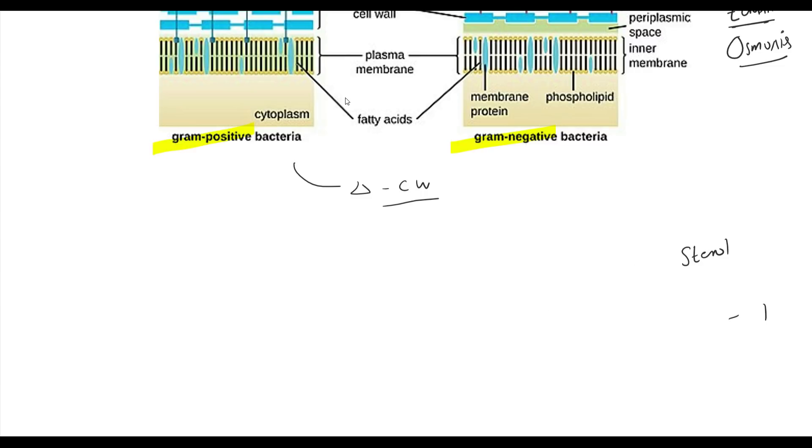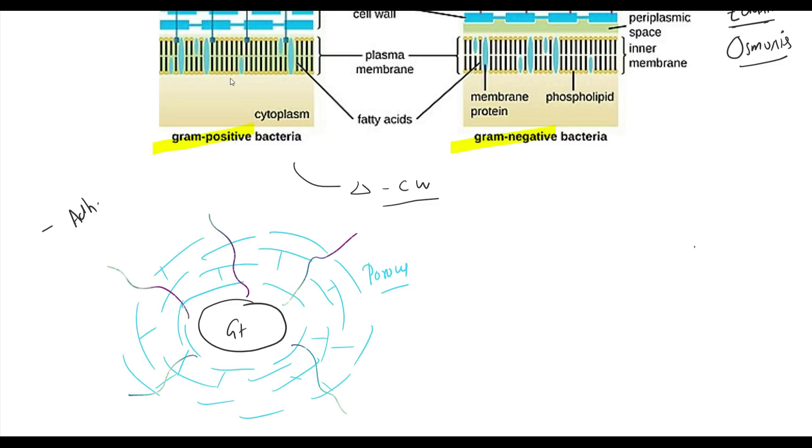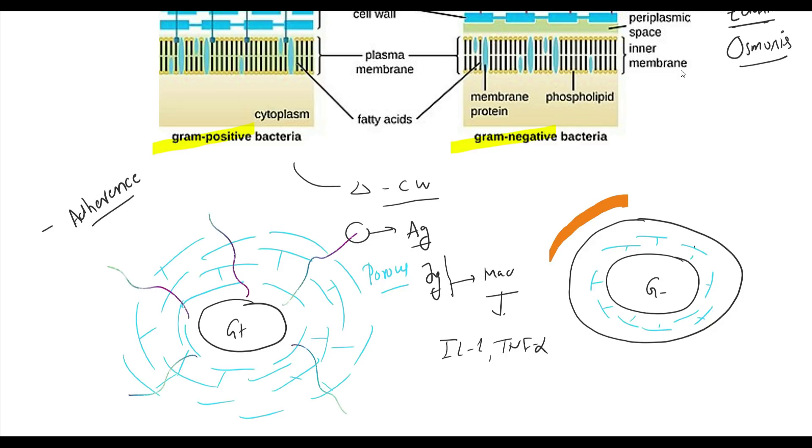In gram positive bacteria, cell membrane is surrounded by thick peptidoglycan layer. This peptidoglycan layer is porous. Apart from peptidoglycan, gram positive bacteria also contain teichoic acid. This teichoic acid helps in adherence to form inflammatory cytokines. In contrast to gram positive bacteria, gram negative bacteria contain very thin peptidoglycan layer between inner membrane and outer membrane in the periplasmic space. Gram negative bacteria contain additional layer which is rich in phospholipids and proteins. This protein forms channel which are important for permeability. This protein channel are called porin.